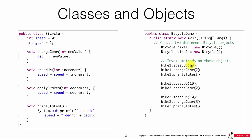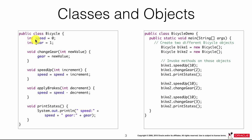Similarly, I can create bike2. Then I can call methods — for example, `bike1.speedUp(10)`, where 10 is the parameter that gets added to the speed. I can call changeGear and printState, and do the same with bike2. To create a class, you give it a name, open bracket, close bracket at the bottom, then define parameters and methods. Class names have to be capitalized; method names start with lowercase. Attributes are usually lowercase unless they are constants, in which case they are uppercase.